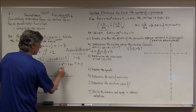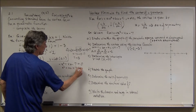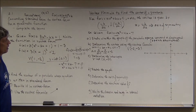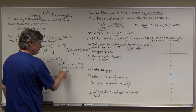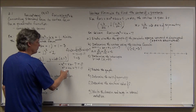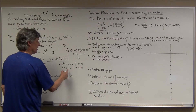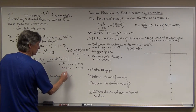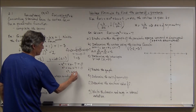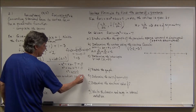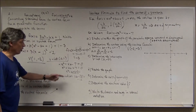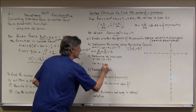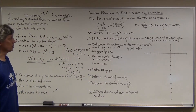Since x² + 4x + 7 = 0 doesn't factor, I'll check the discriminant: b² - 4ac = 4² - 4(1)(7) = 16 - 28 = -12. The discriminant is negative, so there are no real roots, meaning there are no x-intercepts.